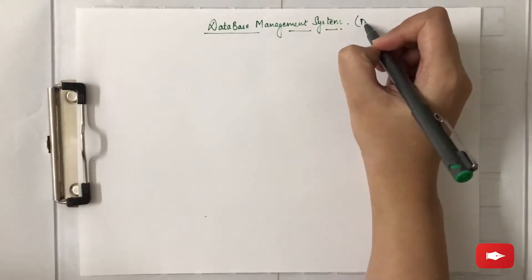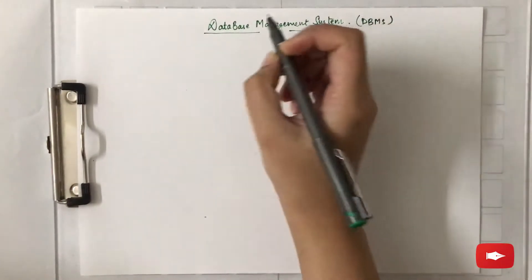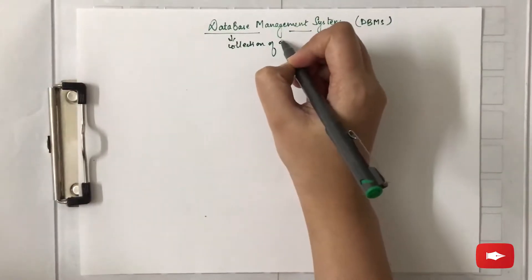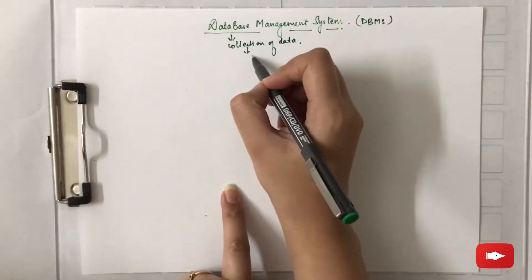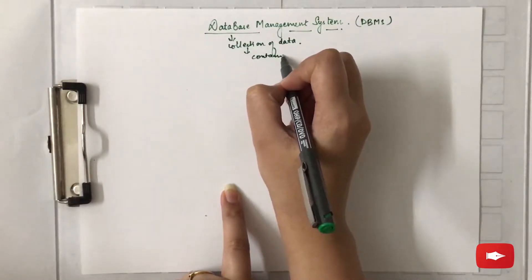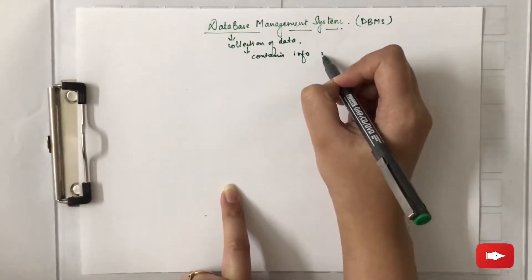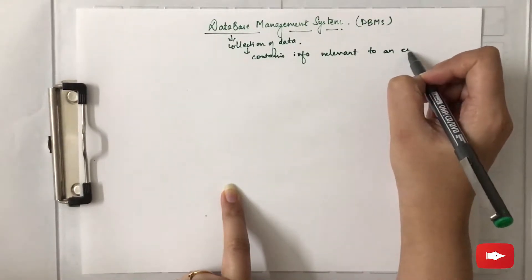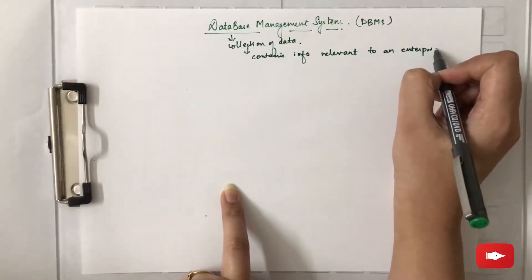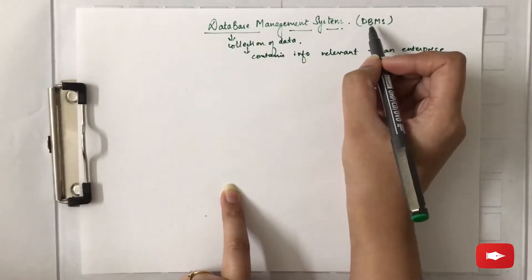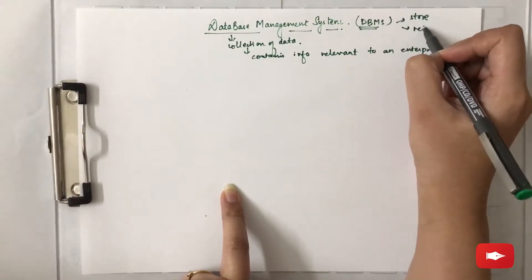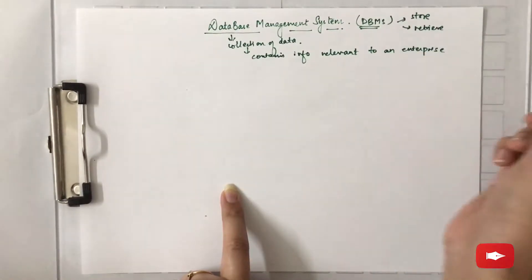DBMS, which is database management system, is basically the collection of data that contains information relevant to an enterprise. The primary goal of a DBMS is to store and retrieve information from that database in an efficient and convenient manner.